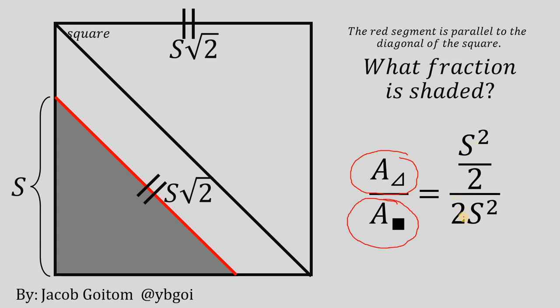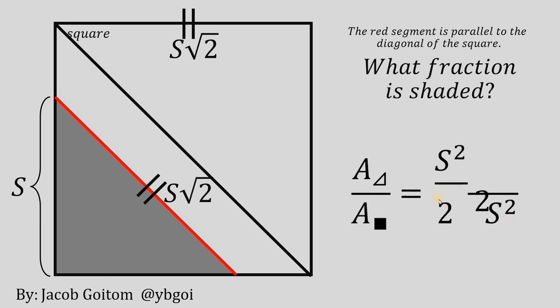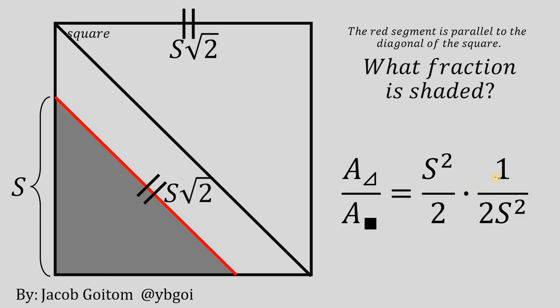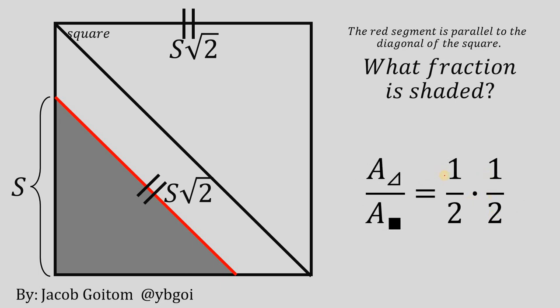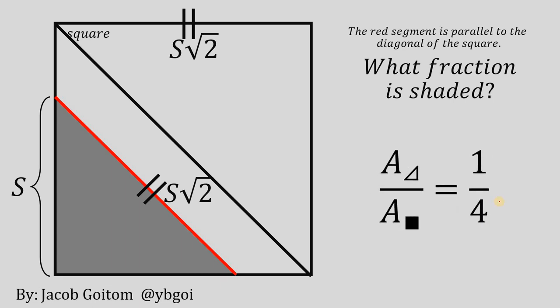Let's simplify: S squared over 2 divided by 2S squared can be written as S squared over 2 multiplied by the reciprocal of 2S squared, which is 1 over 2S squared. We cancel S squared from numerator and denominator, leaving us with one-half times one-half, which equals 1 over 4. That confirms the answer we found earlier: the shaded fraction is 1/4. And as always, we are done.